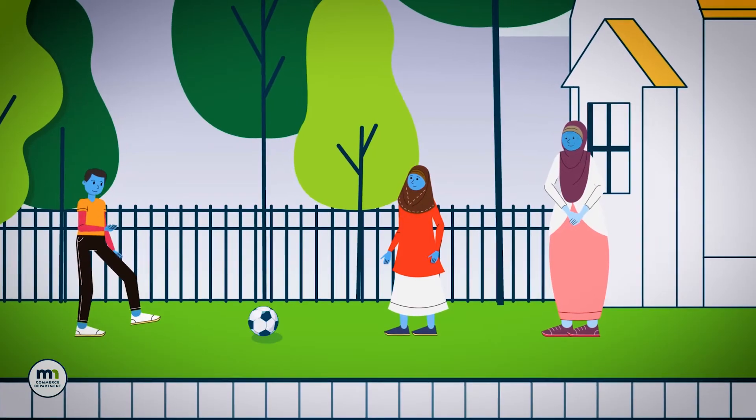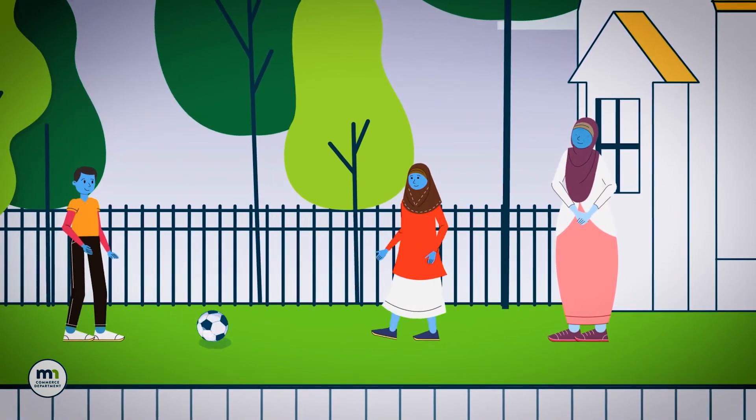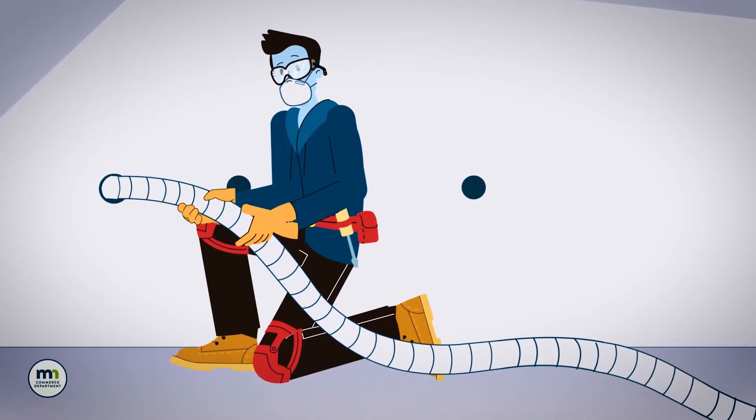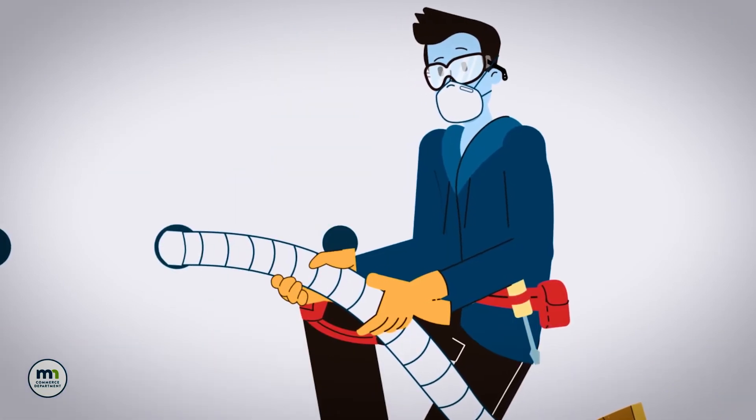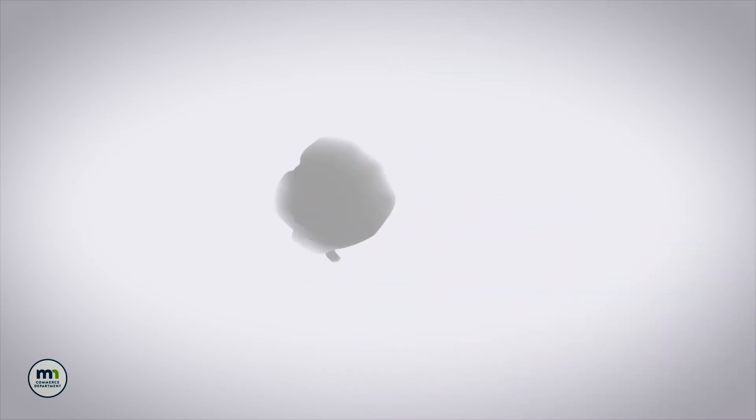If any family members have breathing problems or allergies, they should leave your home while the contractor is working. To do the job, the contractor will drill holes about 16 inches apart and use a hose to blow the insulation into the walls. After the walls are filled with insulation, our crew will patch the holes.